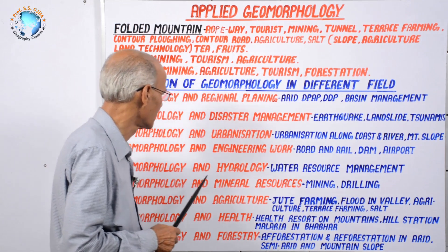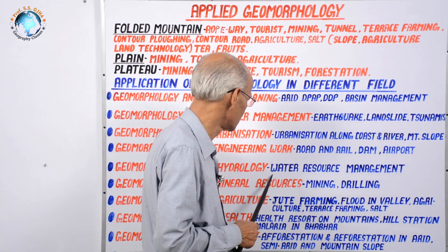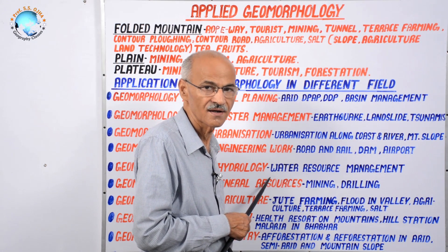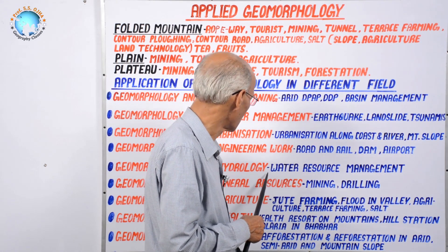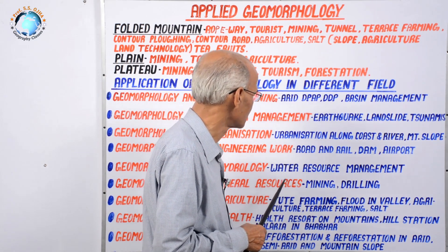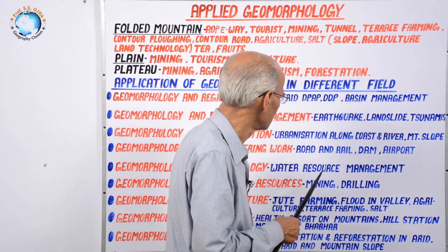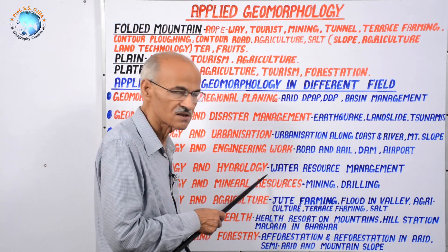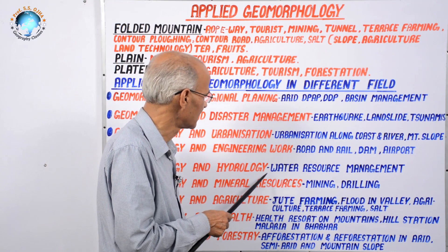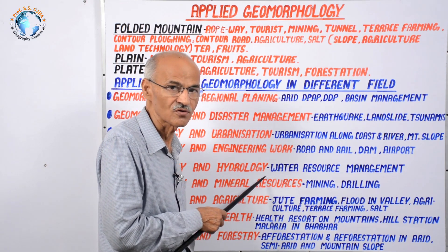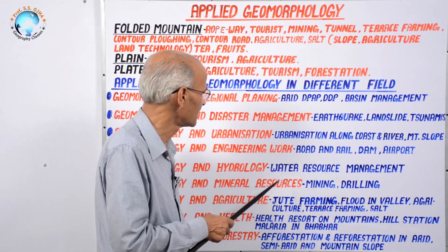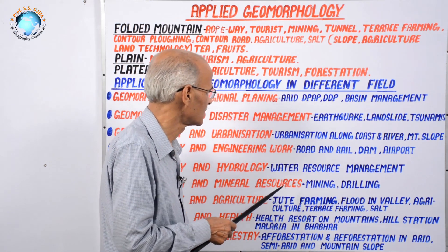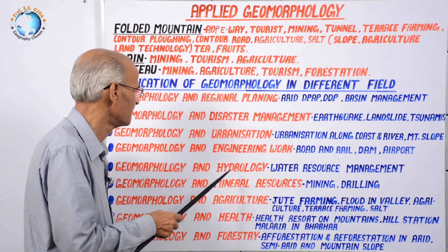Next is geomorphology and hydrology. Hydrology is the scientific study of water in the atmosphere, on land, underground, or in the ocean. On land, water is found as surface water and groundwater, and water resource management requires geomorphic knowledge. In mountainous terrain and desert regions, water is scarce, but in plains, rich water resources should be wisely used for the betterment of human society.